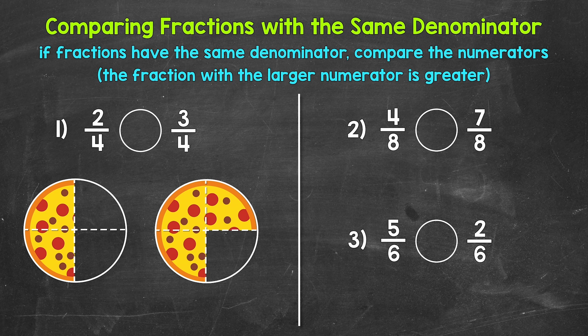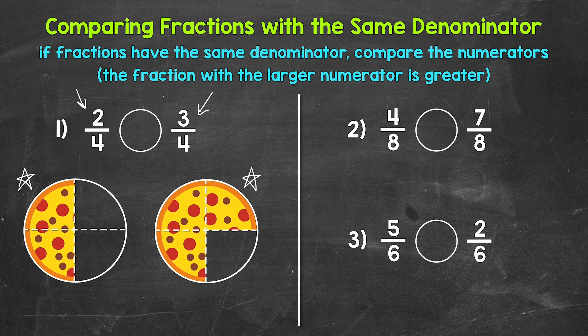Looking at number one, we have two pizzas to help us understand this. Both pizzas are the same size, and both are divided into four equal pieces, so our denominator is four. We are looking at what fraction of each pizza is left. For the pizza on the left, two pieces out of the four total pieces are left — that's two-fourths. For the pizza on the right, there are three pieces out of the four total pieces left — that's three-fourths. We can see that three-fourths is more than two-fourths. Three-fourths is greater; there's more left of the pizza on the right.